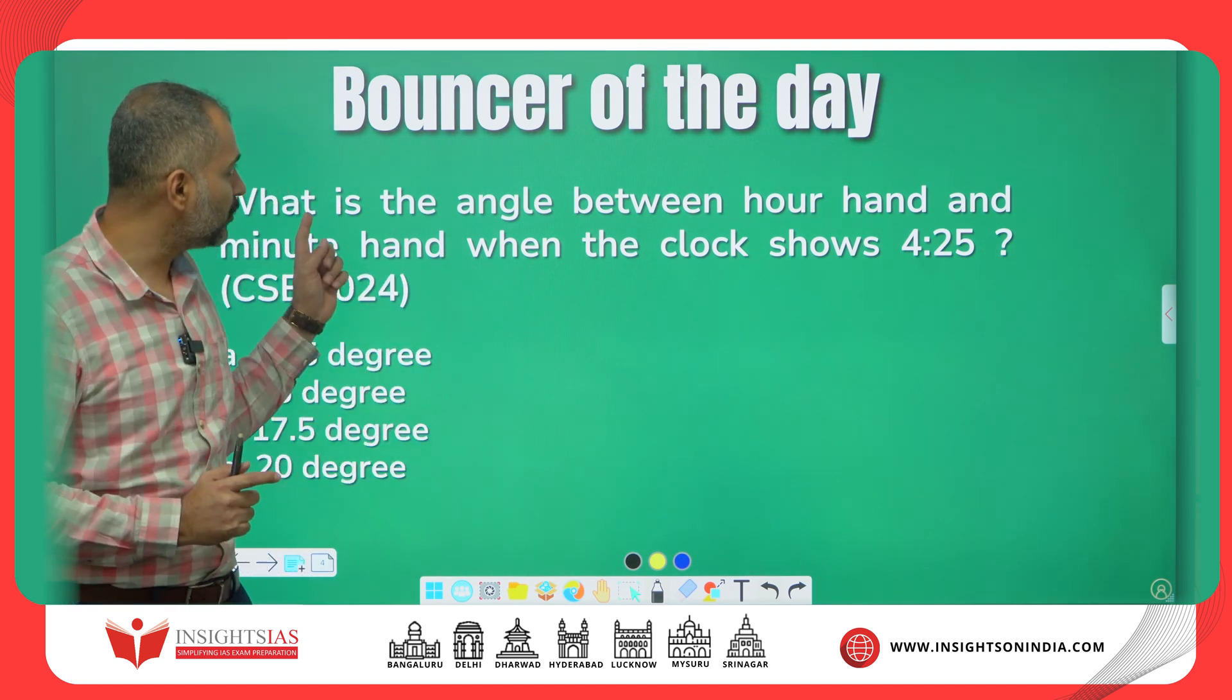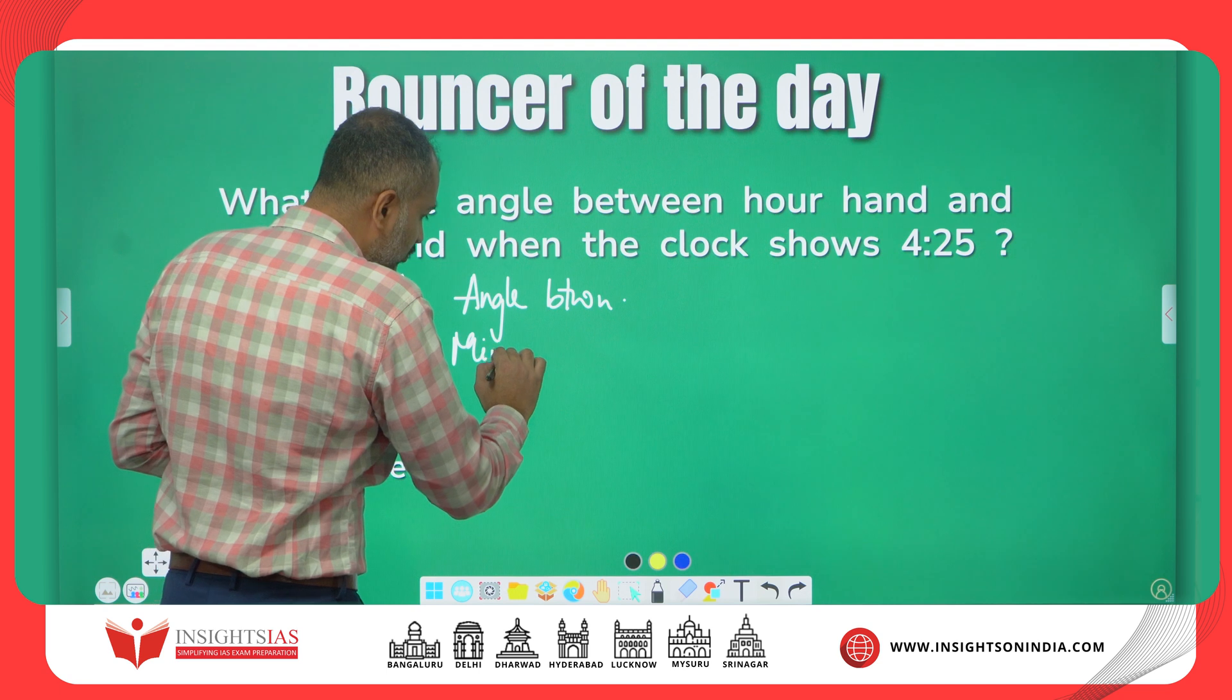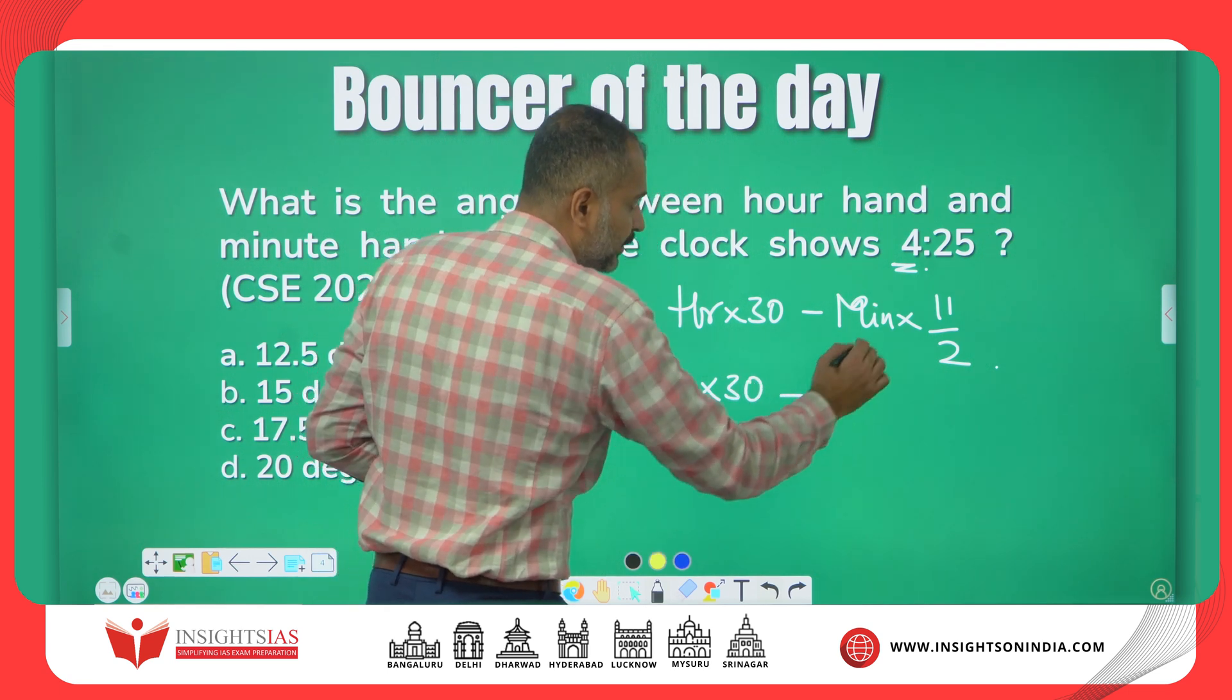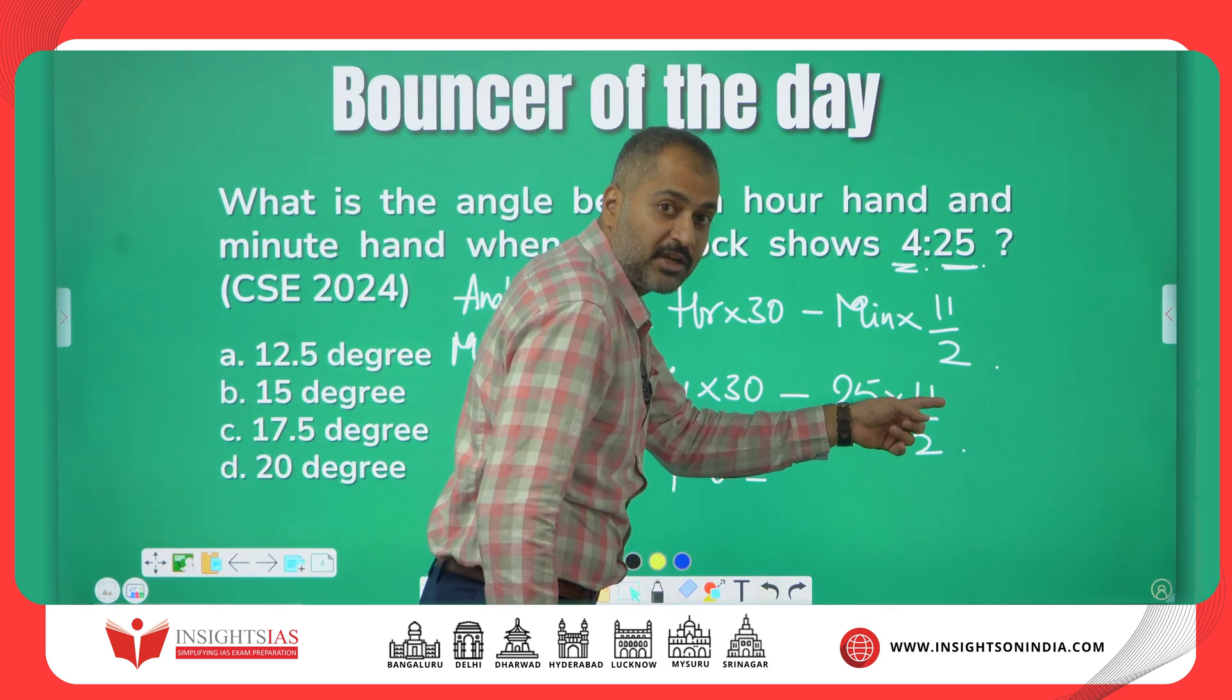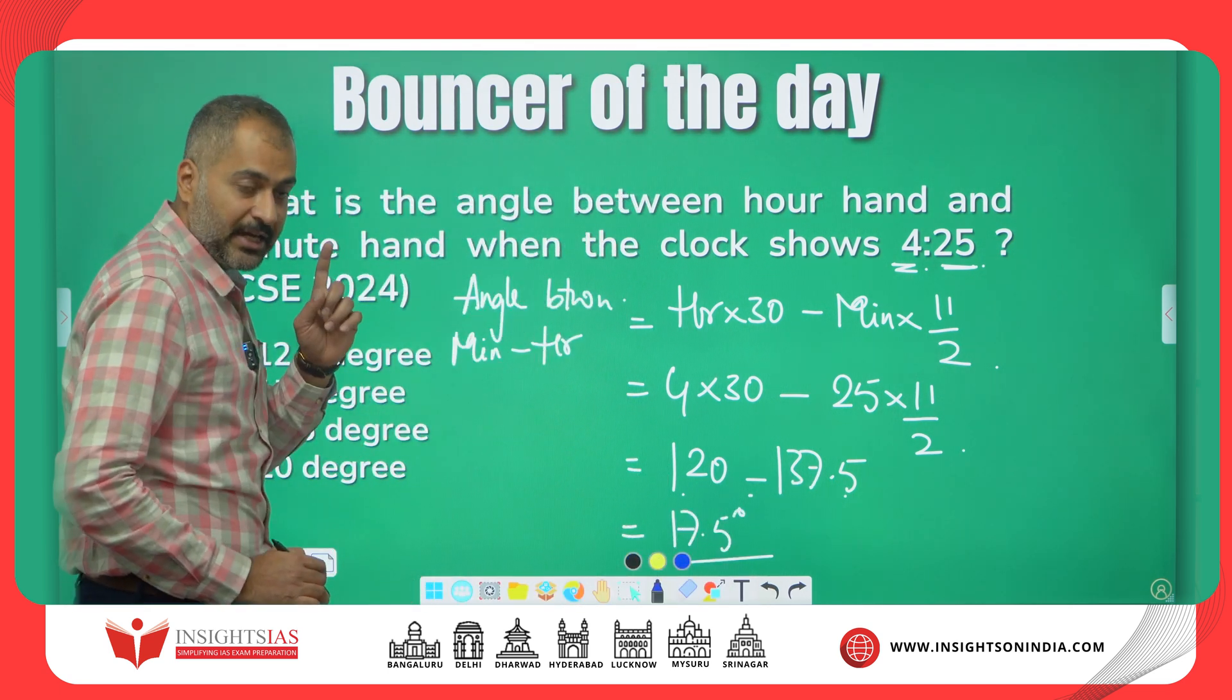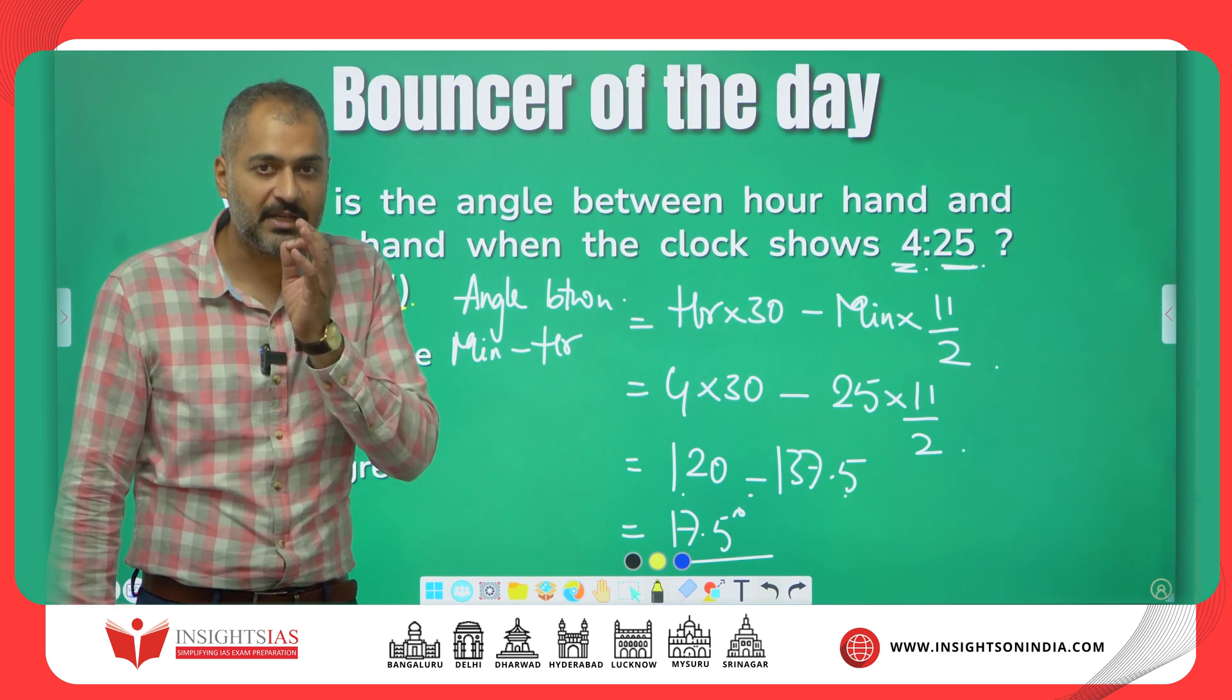In the last video, I gave one homework called the bouncer of the day. The question was: what is the angle between hour hand and minute hand when the clock shows 4:25? I showed you a trick where the angle between minute to hour hand equals hour times 30 minus minute times 11 by 2. H is 4, so 4 times 30 minus minute is 25, 25 times 11 by 2, which is 4 times 30 is 120 minus 25 times 11 is 275, 275 by 2 is 137.5. 120 minus 137.5, the difference is 17.5 degrees. Do not take it as minus, it is a difference. If you knew this, you could have got two and a half marks in the recently concluded CSAT paper within 30 seconds.